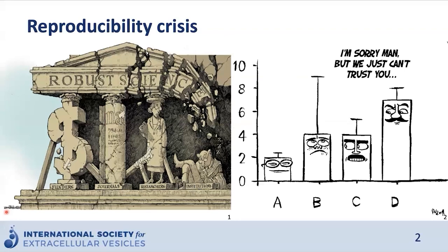Unfortunately, there are many studies out there that are very difficult, if not even impossible, to reproduce. If you have irreproducible results, this can lead to delays in patient treatment, for example, and it can lead to a waste of the time of patients and researchers as well, and also a waste of resources. So it is very important that we can trust our own data, but also the data that is generated by others.